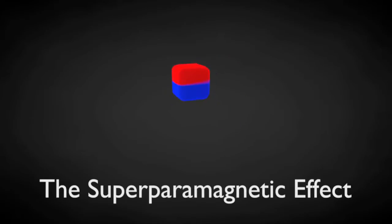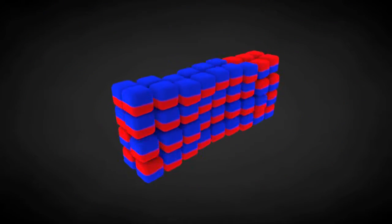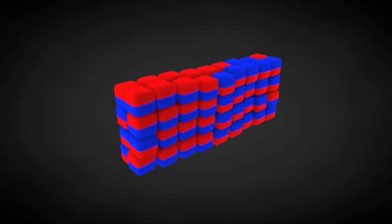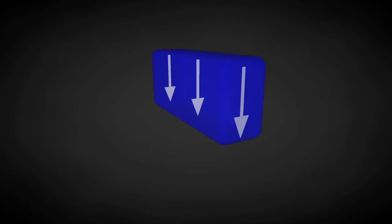This is called the superparamagnetic effect, and it's a big problem for really tiny grains. If enough of the grains in a magnetic region get knocked around, the whole region may change its polarity. This causes the value of the bit to change between one and zero, which is called bit flipping.